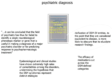What I think is most important in this kind of criticism is this last statement, circled, saying that reification of the DSM 4 entities to the point that they are considered equivalent to disease is more likely to obscure than to elucidate research findings. This may explain why in the last 30 years we have not advanced much in psychiatry, because all the research being done was done using the DSM, and this can be very misleading.